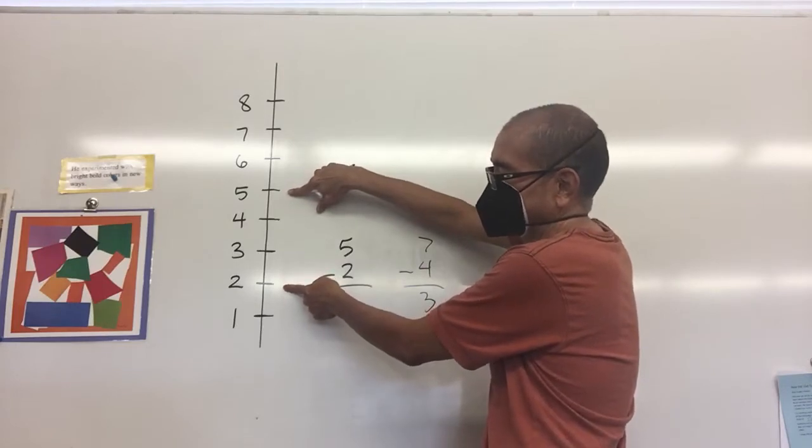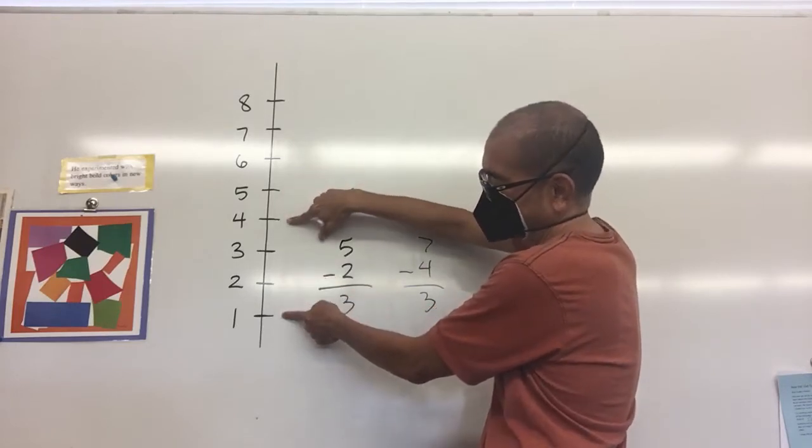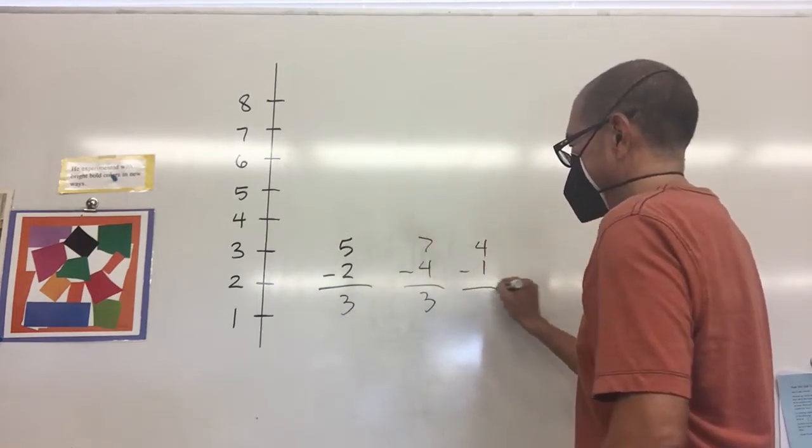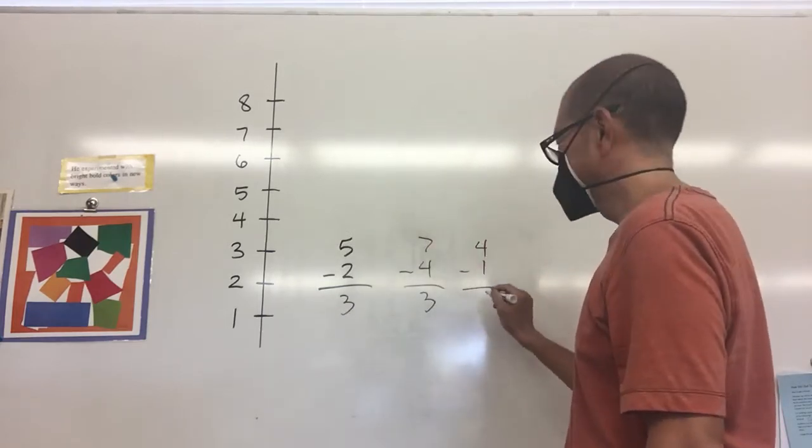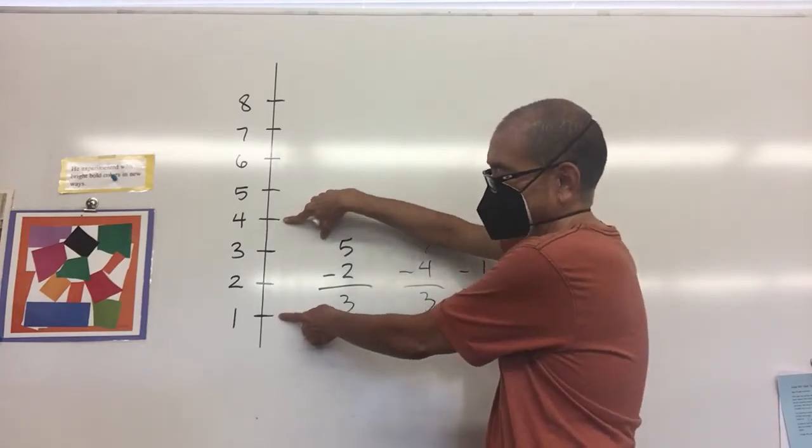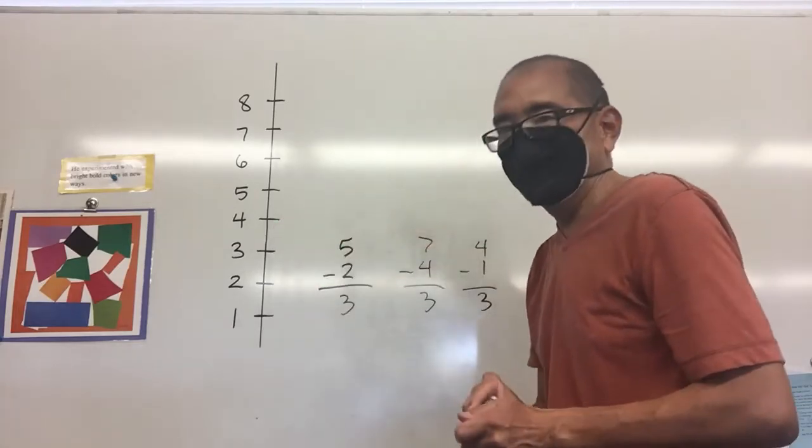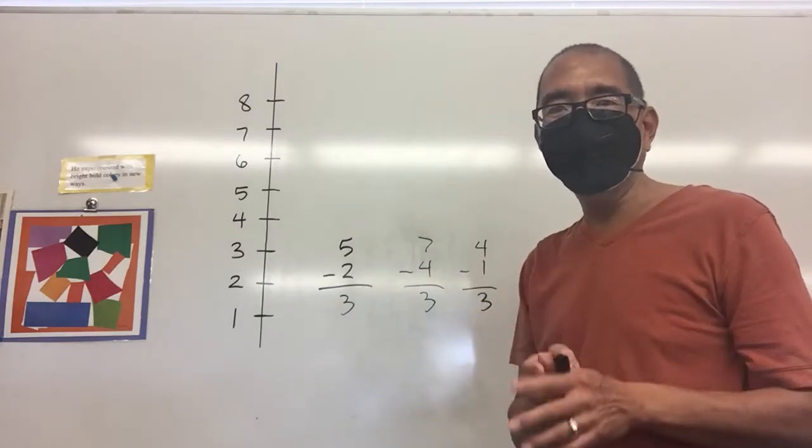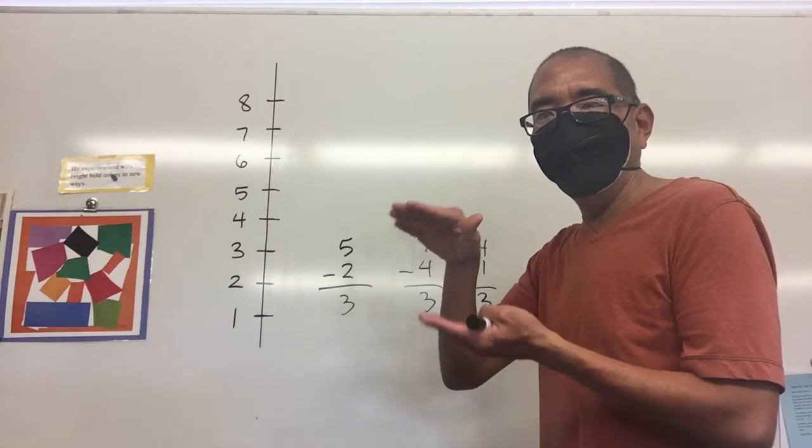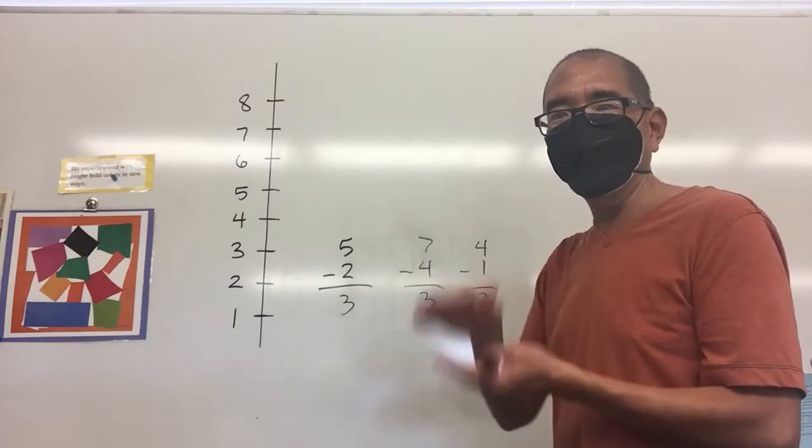What if I move 5 minus 2 down one space? That would get 4 minus 1, and 4 minus 1 is also 3, which makes sense. There's three spaces in between those two numbers.